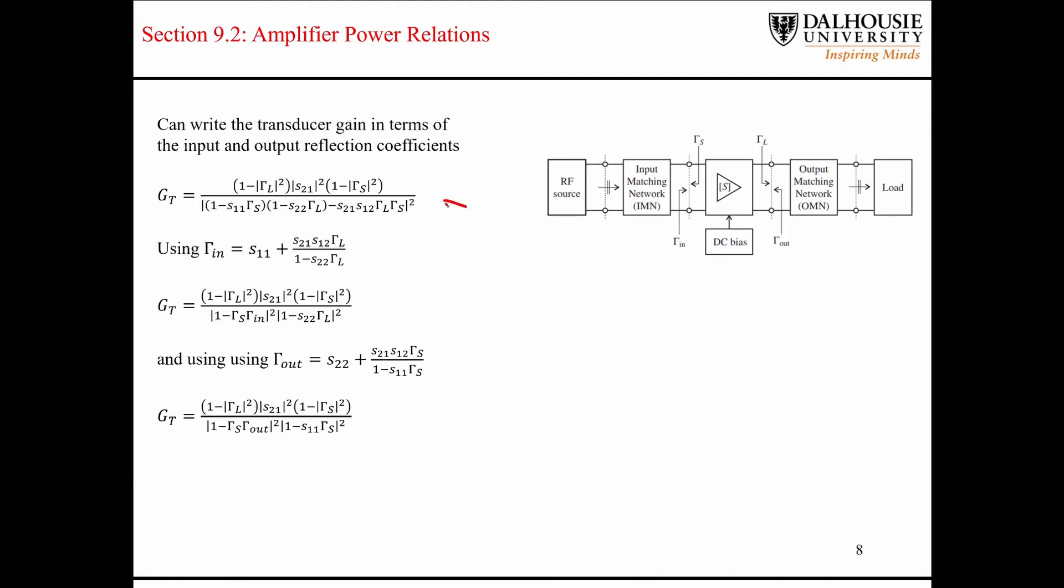Here we have the general expression for the transducer gain. If you substitute the expression for gamma in into this equation for GT, after some simplification, you end up with an expression for the transducer gain in terms of gamma in. You can also do the same thing in terms of gamma out. Substitute that into the equation here on the top and you end up with another expression in terms of gamma out.